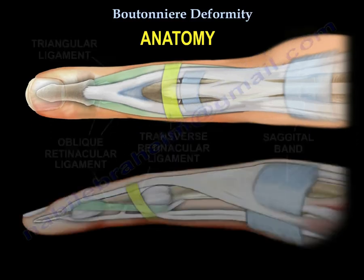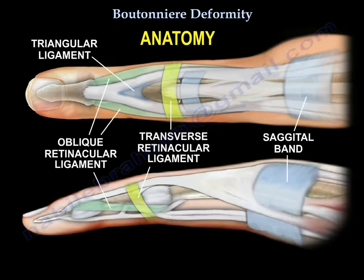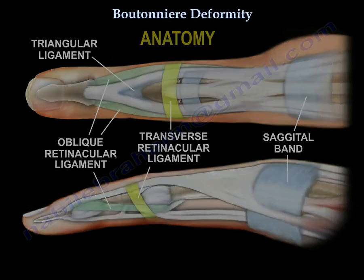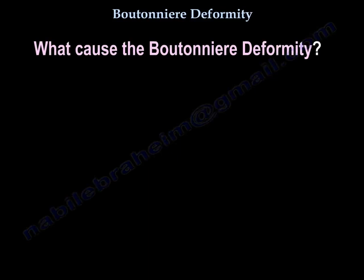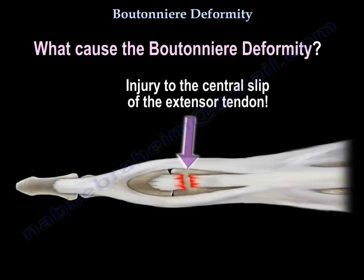Here is a side view showing the arrangement of the tendons and the ligaments. What causes Boutonniere deformity? The answer is injury to the central slip of the extensor tendon.